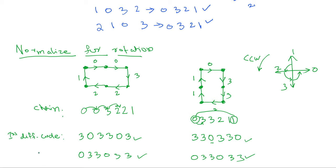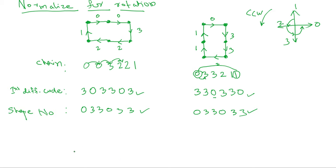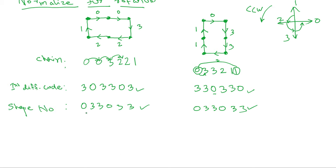The minimum magnitude difference code is called the shape number of that boundary. The shape number is the minimum magnitude integer obtained from the first difference code. We have discussed methods to normalize the chain code with respect to a starting point as well as with respect to rotation. After doing this, the shape number will be both rotation-invariant and starting-point invariant.